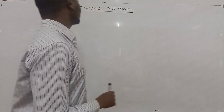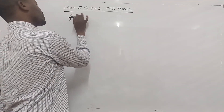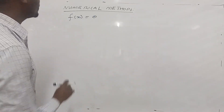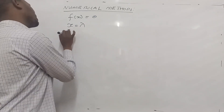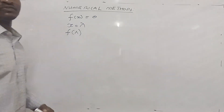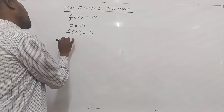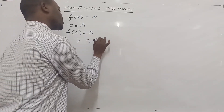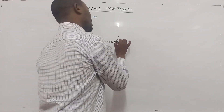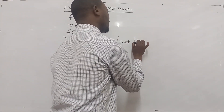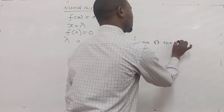Now let us concentrate on the first item. We know that we regularly encounter equations of the form f(x) = 0. If we have a number x equal to lambda, and we substitute lambda into the function f(x), and both sides equal to 0, then we say lambda is a solution — we can call it a solution, a root, or a zero of the function f(x).